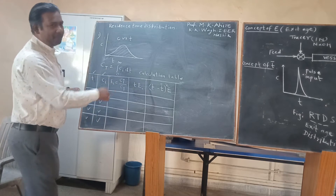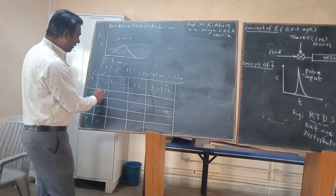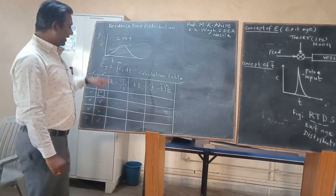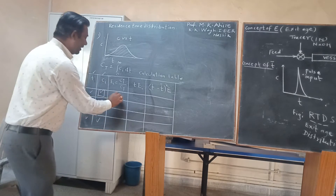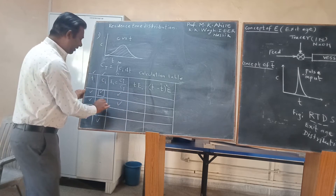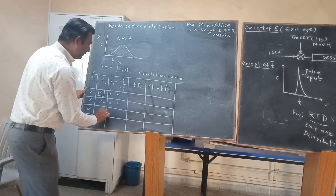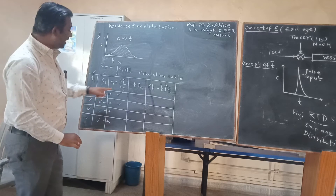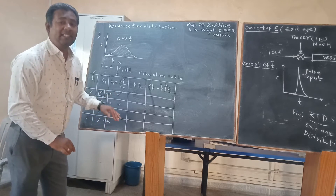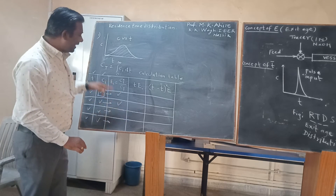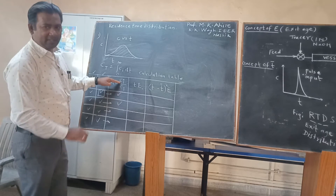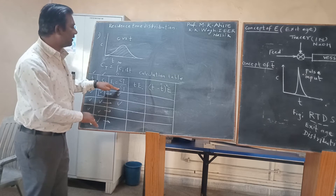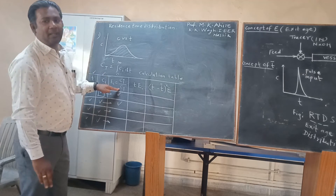After 4 or 5 readings, you will get some value of concentration. Whatever value you have got, you divide it by total concentration Ct — that is, Ci divided by Ct — and you get a corresponding value of exit E. For every corresponding concentration, you get a corresponding value of exit E. Exit E is the fraction of concentration coming out of the reactor divided by the total concentration of the tracer.